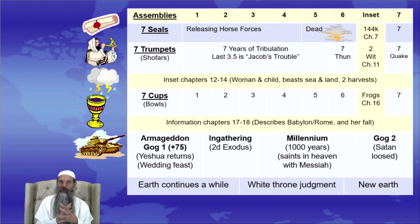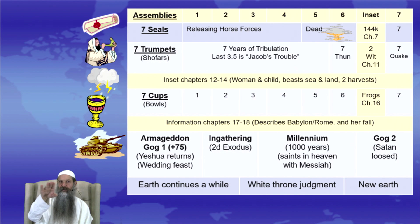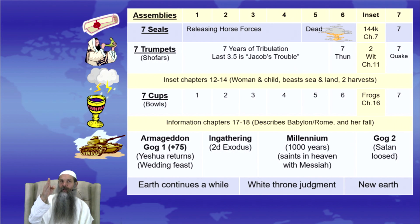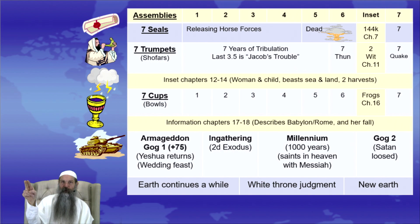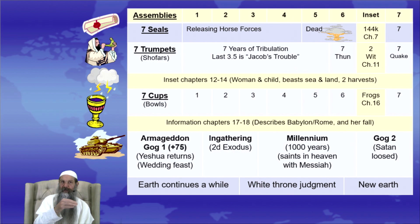Revelation begins with the assemblies — three informational chapters. In the graphic, everything listed in pale yellow is an inset or informational chapter. Reading the timeline, you go from left to right, top to bottom. Every time you bump into an inset, the storyline doesn't advance. Anything shown in blue or dark blue represents timeline chapters. Wherever you see pale yellow, that's an inset chapter.